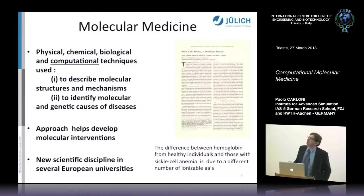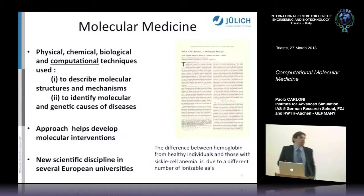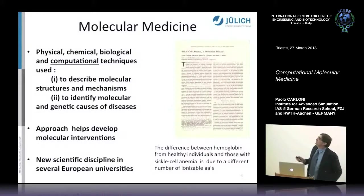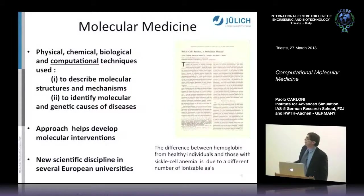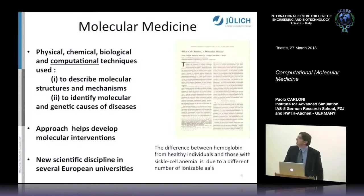Molecular medicine uses physical, chemical, biological, and computational techniques to describe molecular mechanisms and to identify molecular and genetic causes of diseases. One of the first contributions is arguably by Nobel laureate Linus Pauling, who identified sickle cell anemia as a molecular disease in his paper in Science back in the 40s. He found by gel electrophoresis that there were changes in residues of hemoglobin in healthy versus diseased cells, giving a molecular basis for the disease.